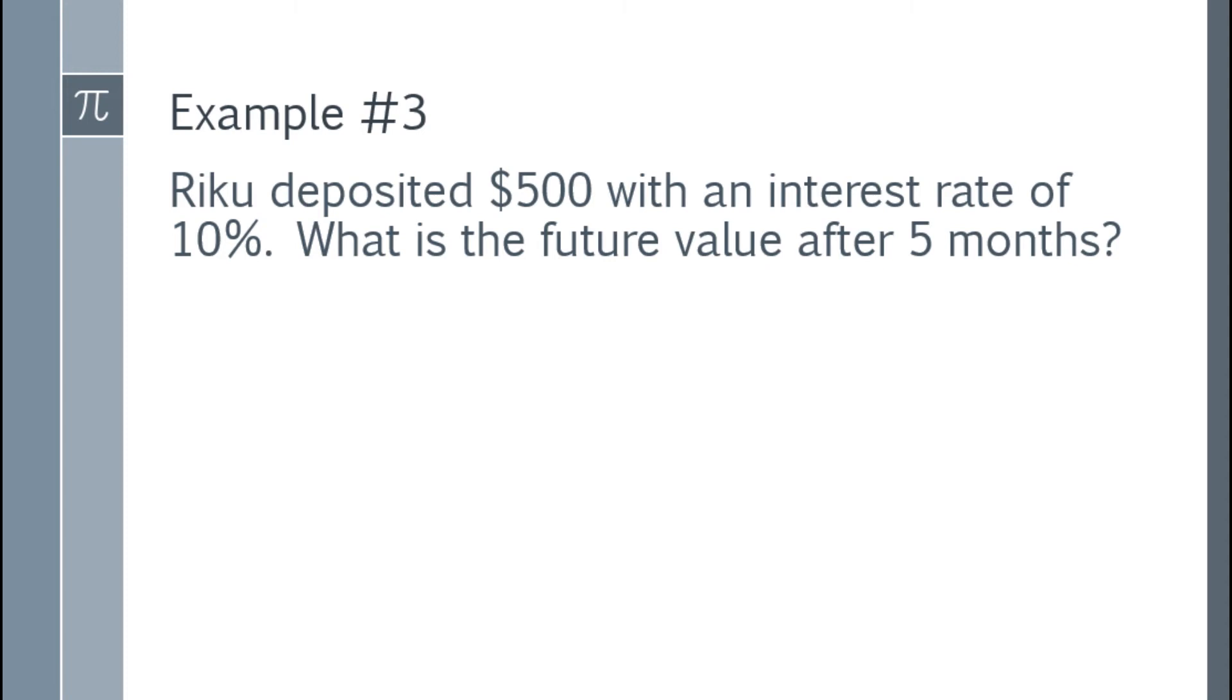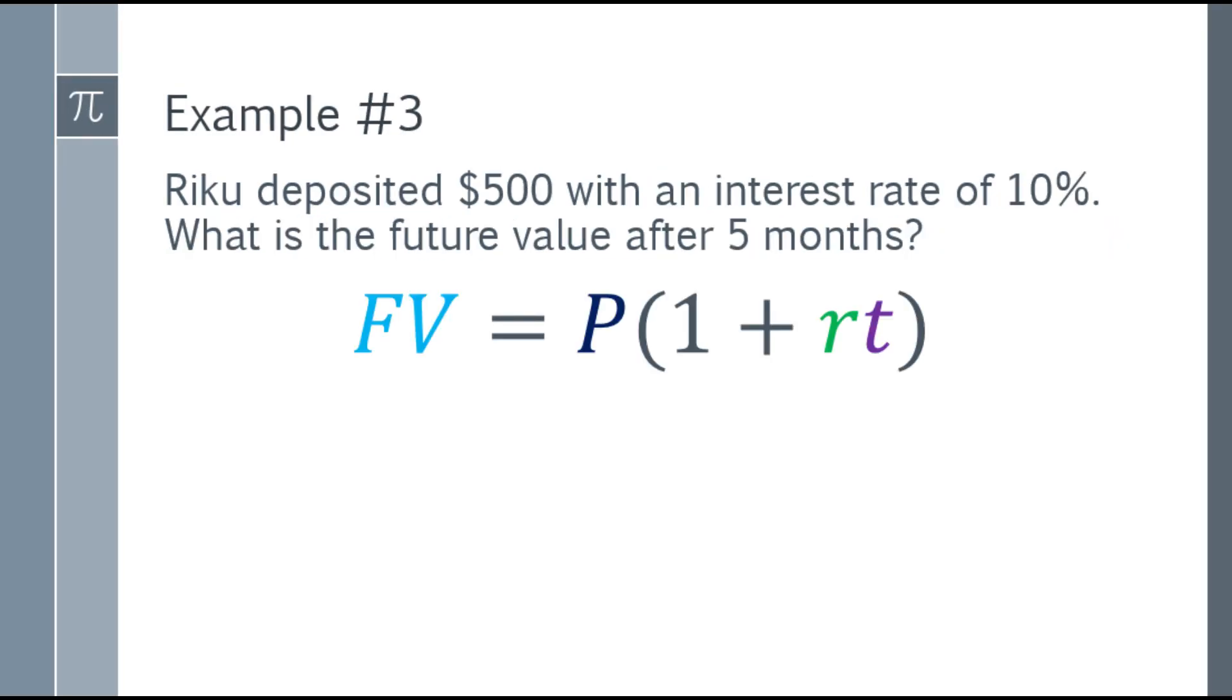Alright, so example number 3. Riku deposited $500 with an interest rate of 10%. What is the future value after 5 months? So we have the rate, the time, and the principal. You can use the formula: future value is equal to the principal times the quantity of 1 plus RT.